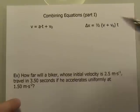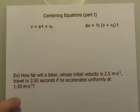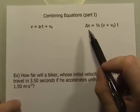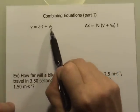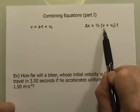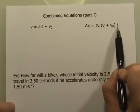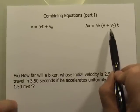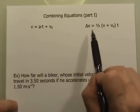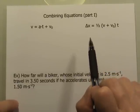We're going to look at the first possible combination of equations so that we can come up with another variation. You can see there are four variables in this equation and four in this one: the displacement, the final velocity, the initial velocity, and the time. What I'd like to do is combine them together in such a way that we're going to eliminate one of the variables.